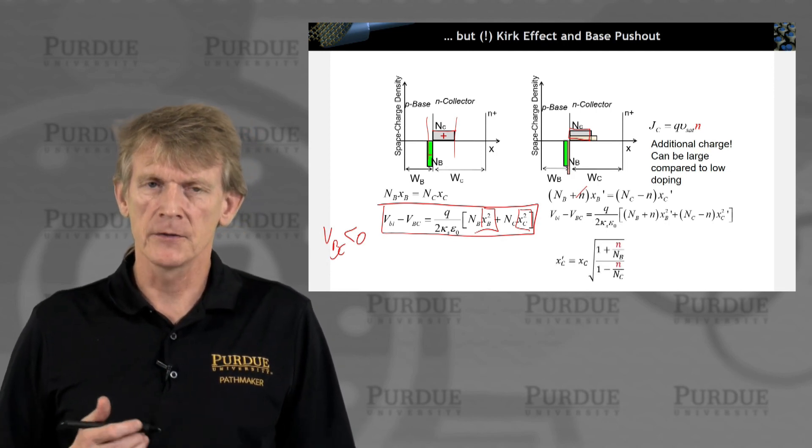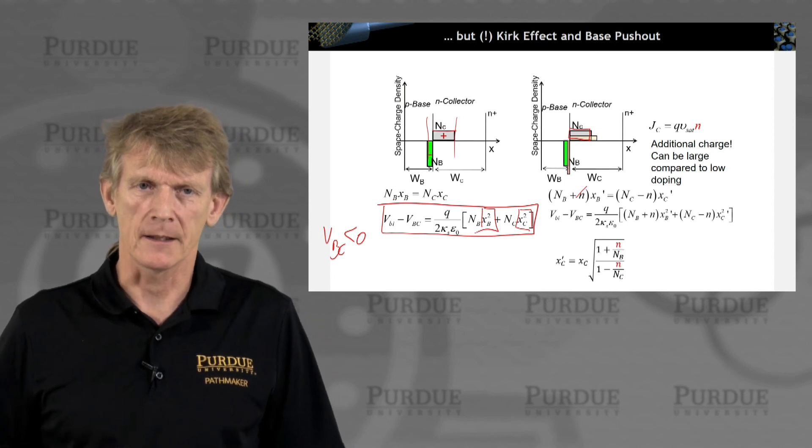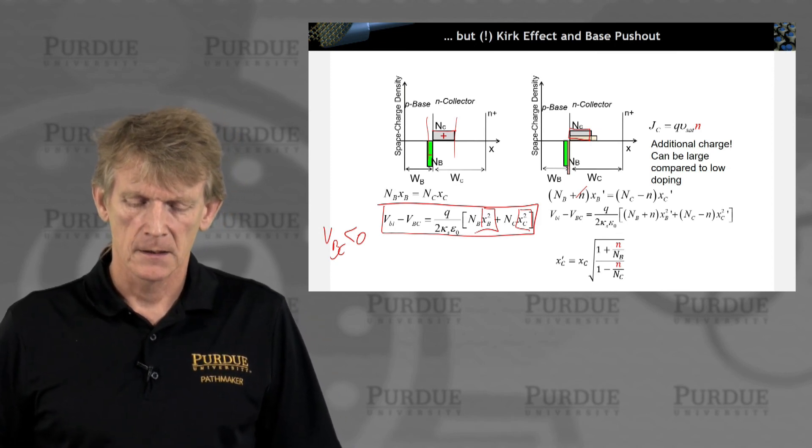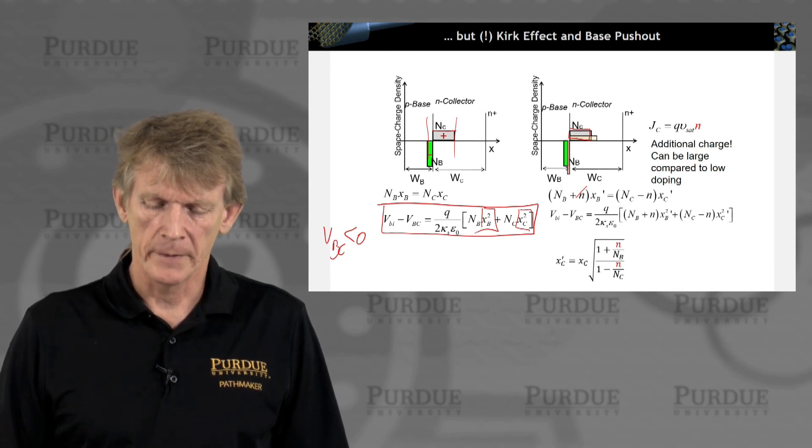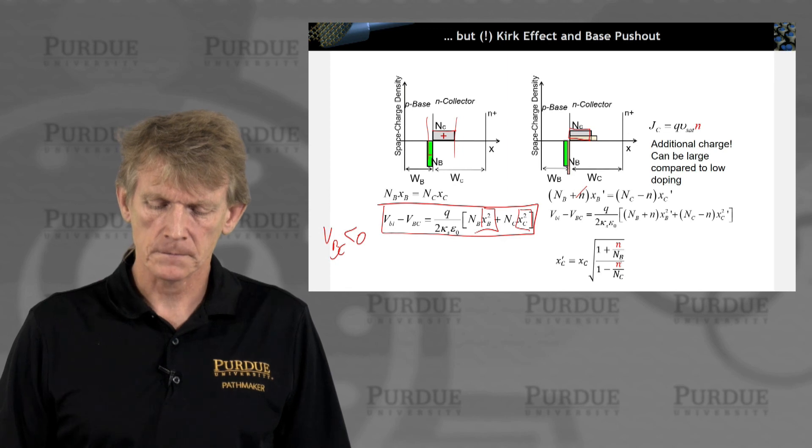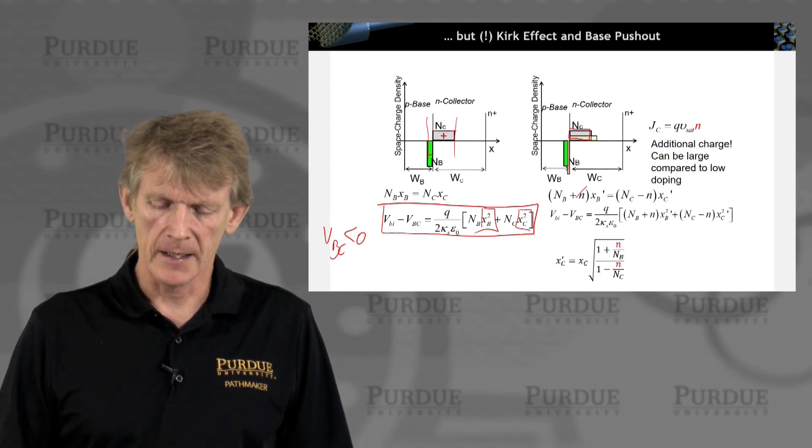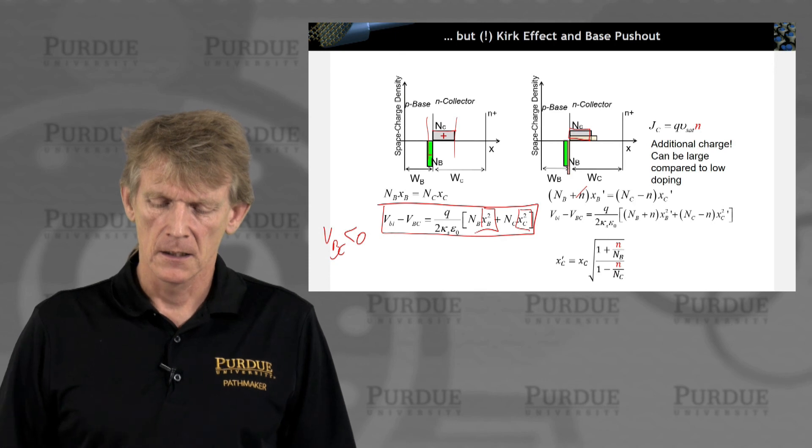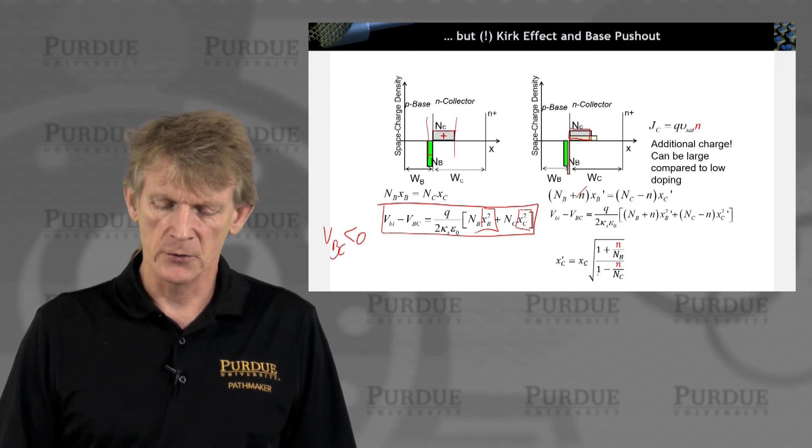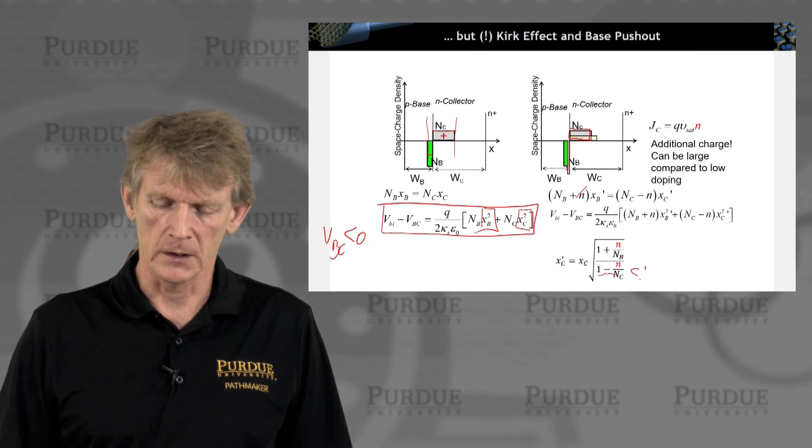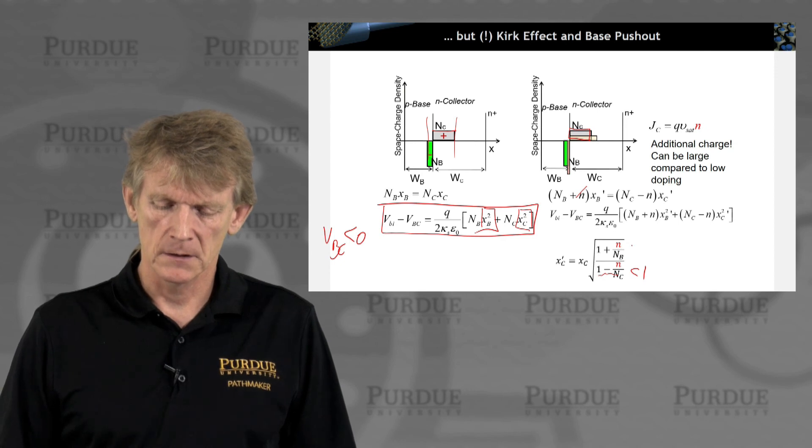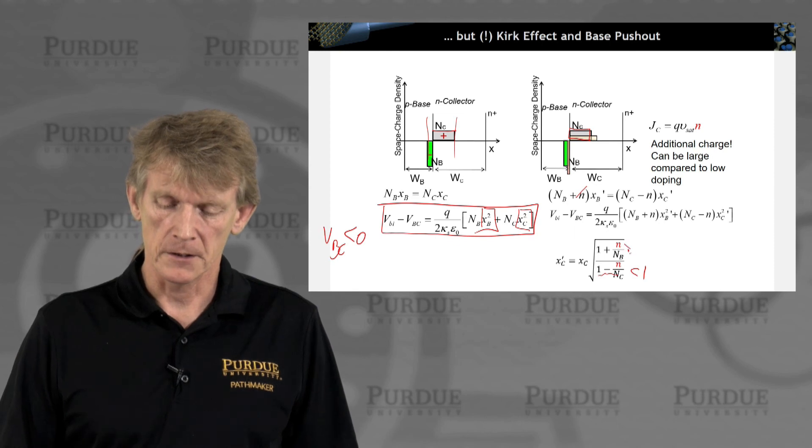So you have an equivalent collector depletion region length that as you ramp up N compared to the collector doping, so if you get N and C getting closer to each other, you reduce this coefficient, right? So this starts to be less than 1.